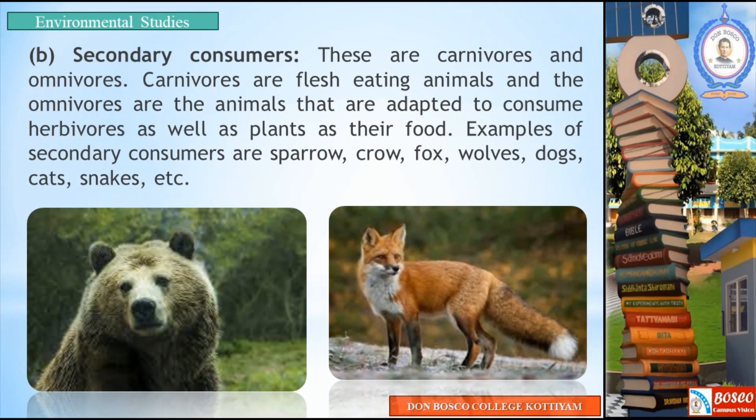Secondary consumers are carnivorous and omnivorous animals. Carnivorous are flesh-eating animals, and omnivorous are animals adapted to consume both herbivores and plants as their food. Examples of secondary consumers are sparrow, crow, fox, wolves, dogs, cats, and snakes.